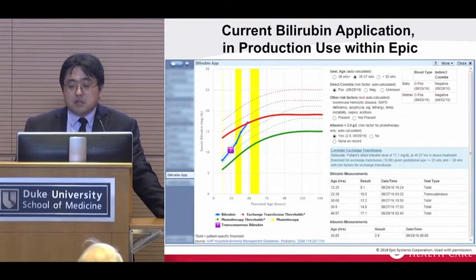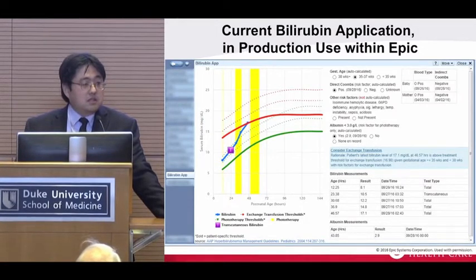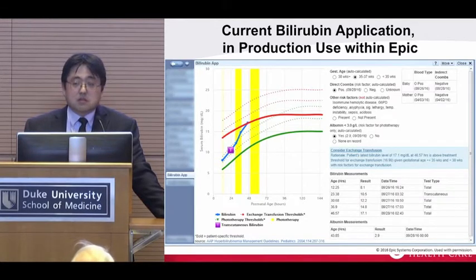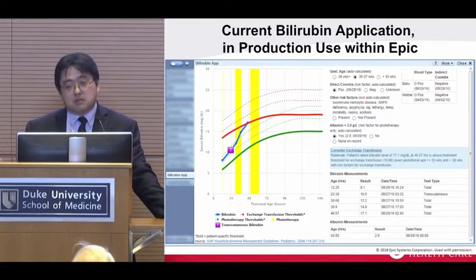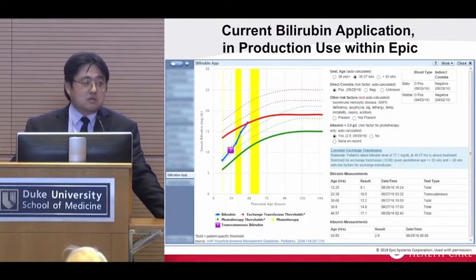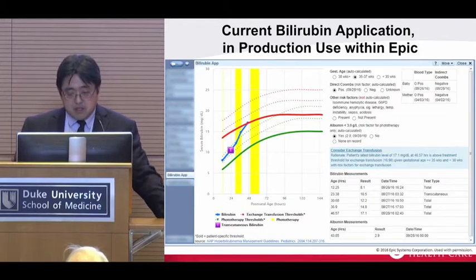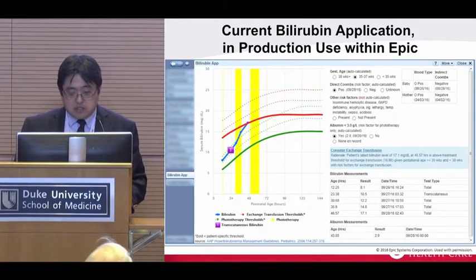This pulls in the baby's blood type and indirect bilirubin. We can identify the link in the medical record for who the mother is, so we can go into the mother's record and pull her data in too, so the physician doesn't have to go into her chart separately to look for that information. Our physicians seem to really like this.